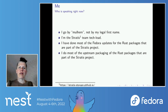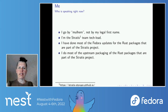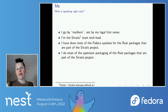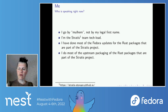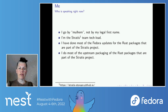And who am I? My name — what you should call me is Mulhern if you want to. I'm the Stratis team tech lead, and I do a lot of the Fedora updates for the Rust packages that are part of the Stratis project, although I don't think I actually originated the Fedora package of any one of them. I also do a lot of the upstream packaging of the Rust packages.